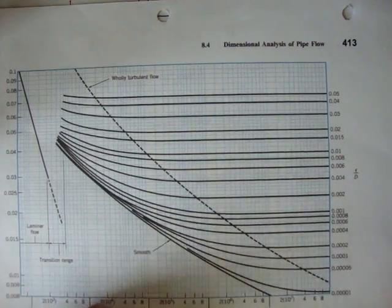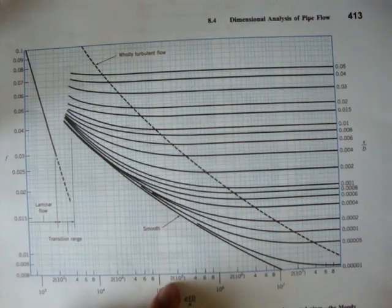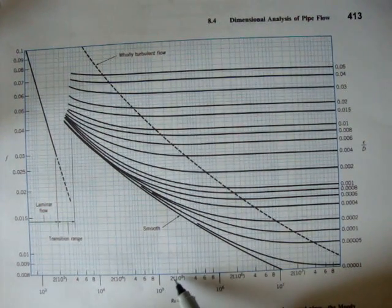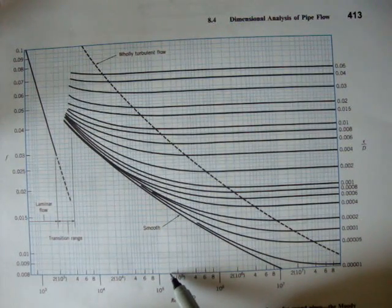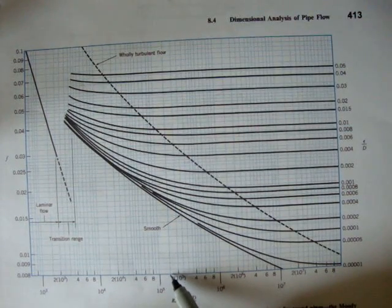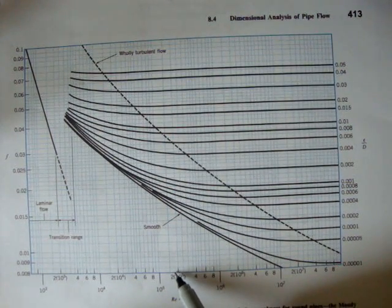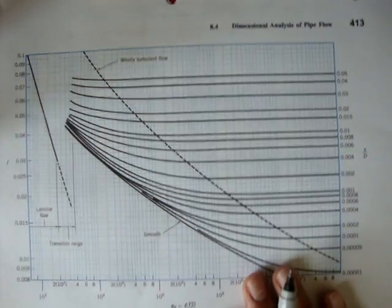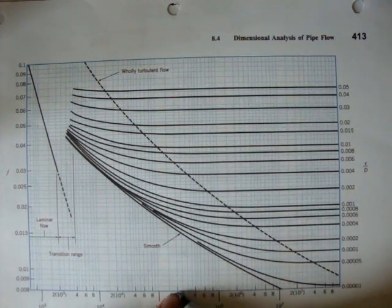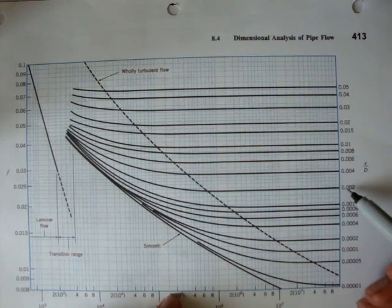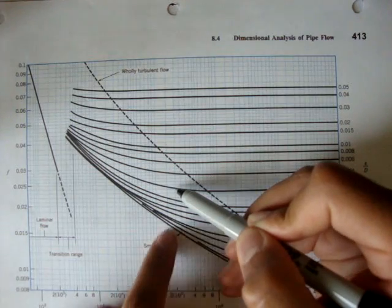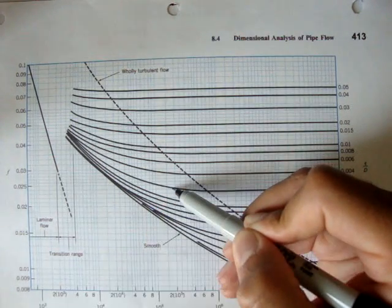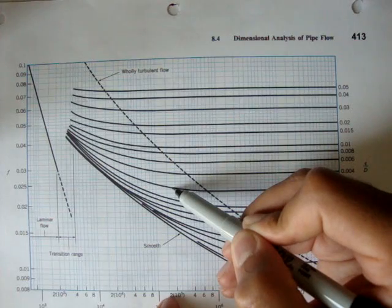And our Reynolds number was 1.69 times 10 to the 5th. Here's the 10 to the 5th, and here's 2 times 10 to the 5th. This blue line right here would be 1 times 10 to the 5th. So 1.69 times 10 to the 5th would be somewhere around here. Now if we use that Reynolds number and this relative roughness, 0.002, we can see that the intersection is somewhere here.